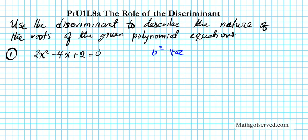So first thing we must ask ourselves: is this equation in standard form? Is it equal to 0 and everything arranged in descending order? It is, so it's in standard form. The standard form for quadratic equations, just as a reminder, is ax squared plus bx plus c equals 0. Degrees in descending order and all terms on one side of the equation equal to 0.